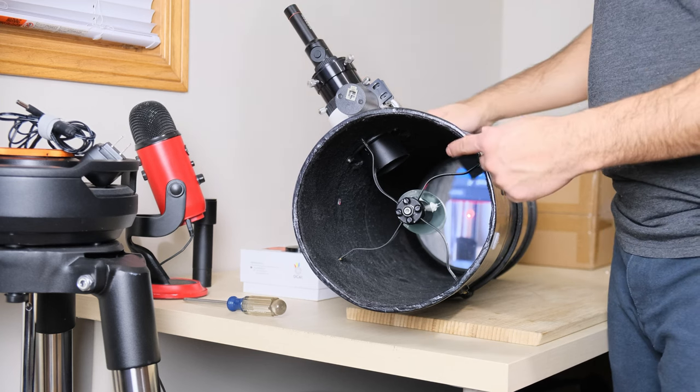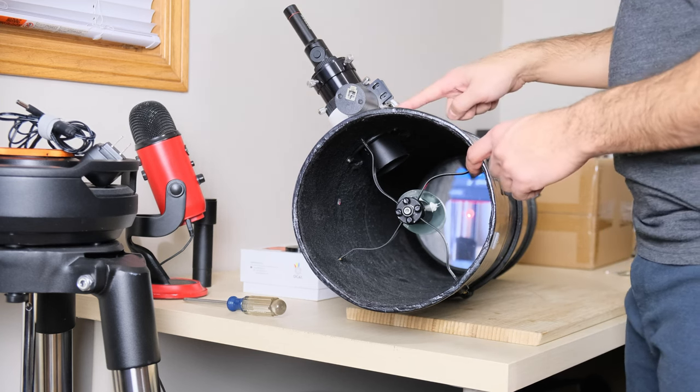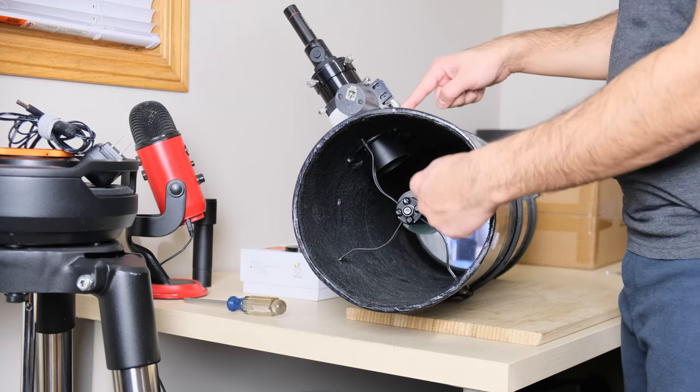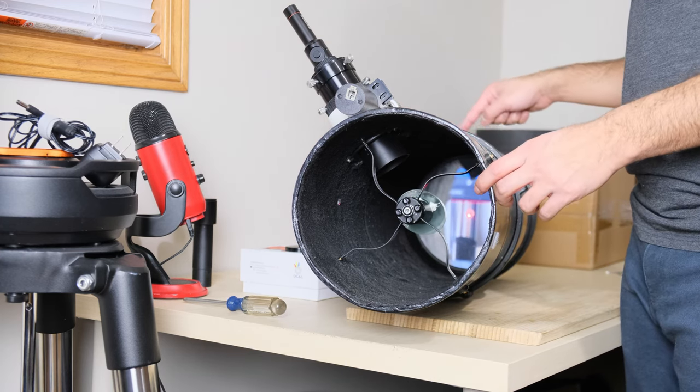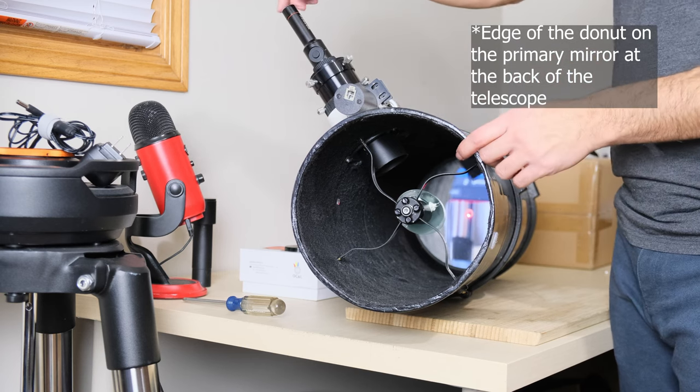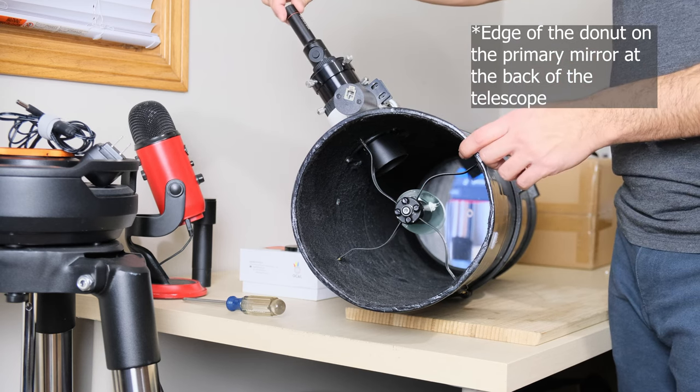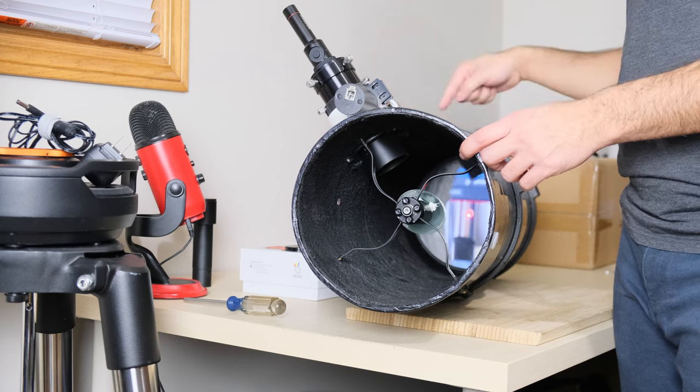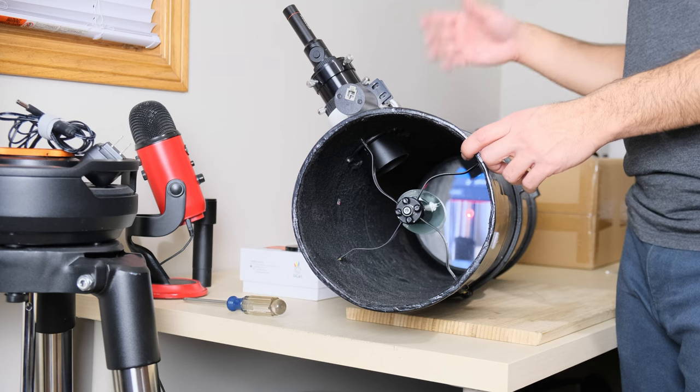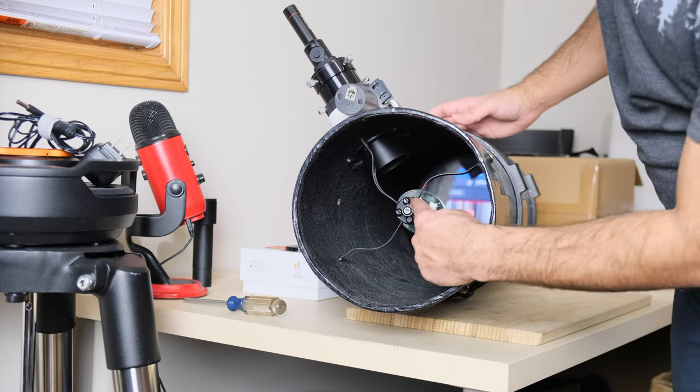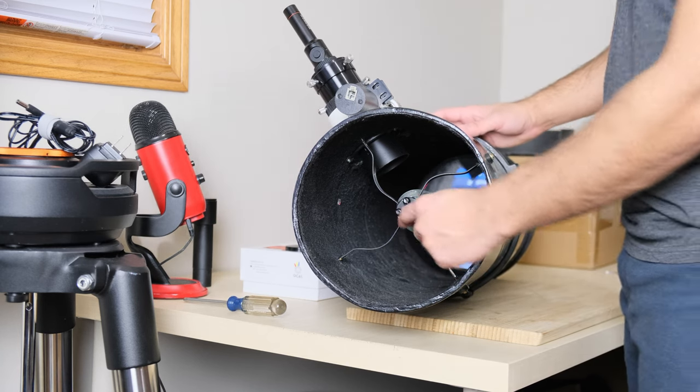When I turn on the laser, you can see it going down from the top and hitting the secondary mirror, then projecting a bright red dot onto the edge of that donut. If I turn the laser off and on, you can see where the laser is—at the edge of the donut. We want that to be hitting the very center of the donut. For that, you need to adjust the collimation screws along the outer edge of the secondary mirror.